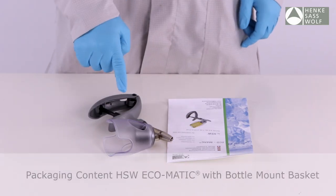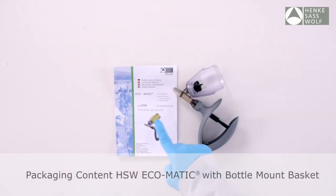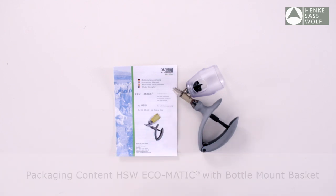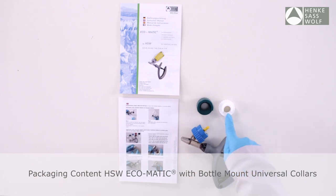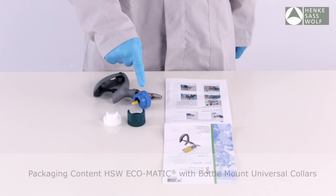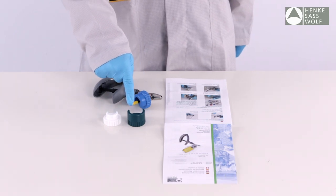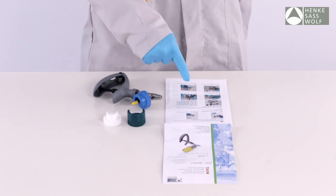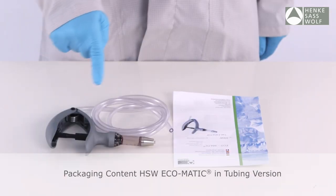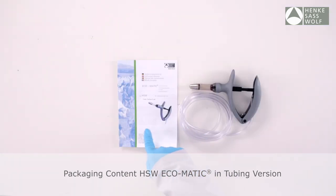Ecomatic with bottle mount. Instructions for use. Ecomatic with bottle mount: white bottle collar for bottles with 20mm, blue bottle collars for bottles with 30mm, green bottle collars for bottles with 33mm. Instructions for use. Ecomatic with tubing. Instructions for use.